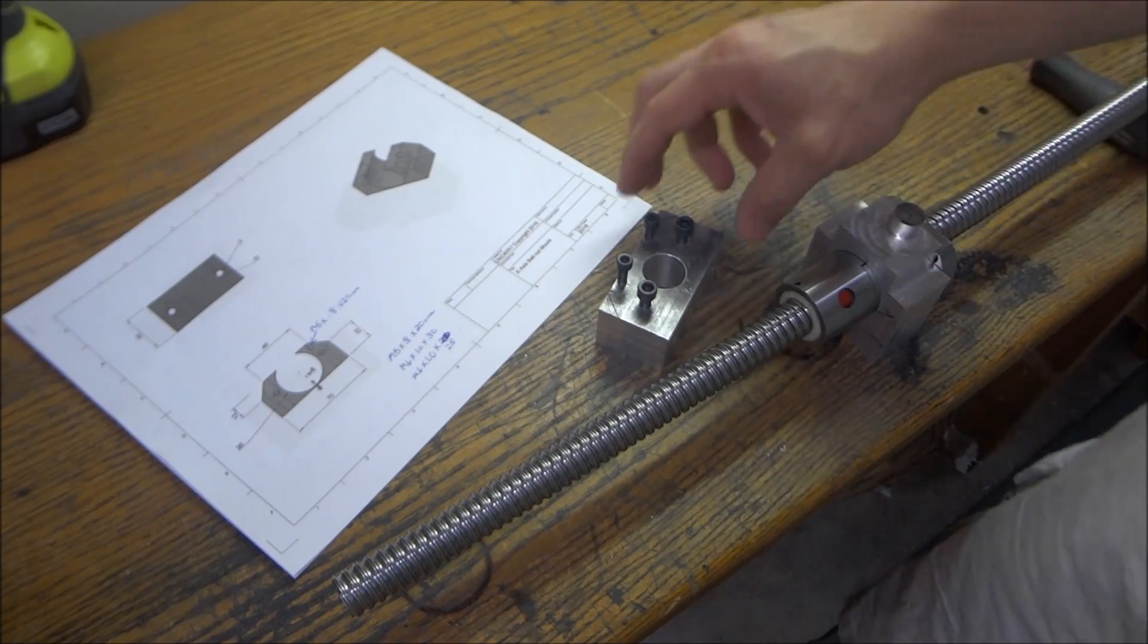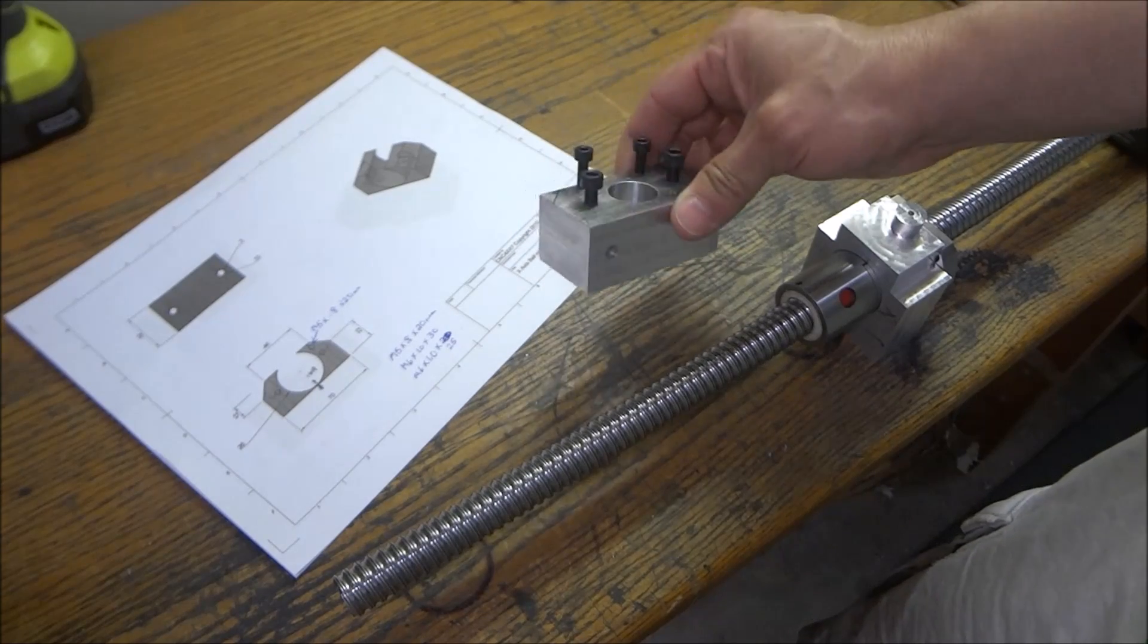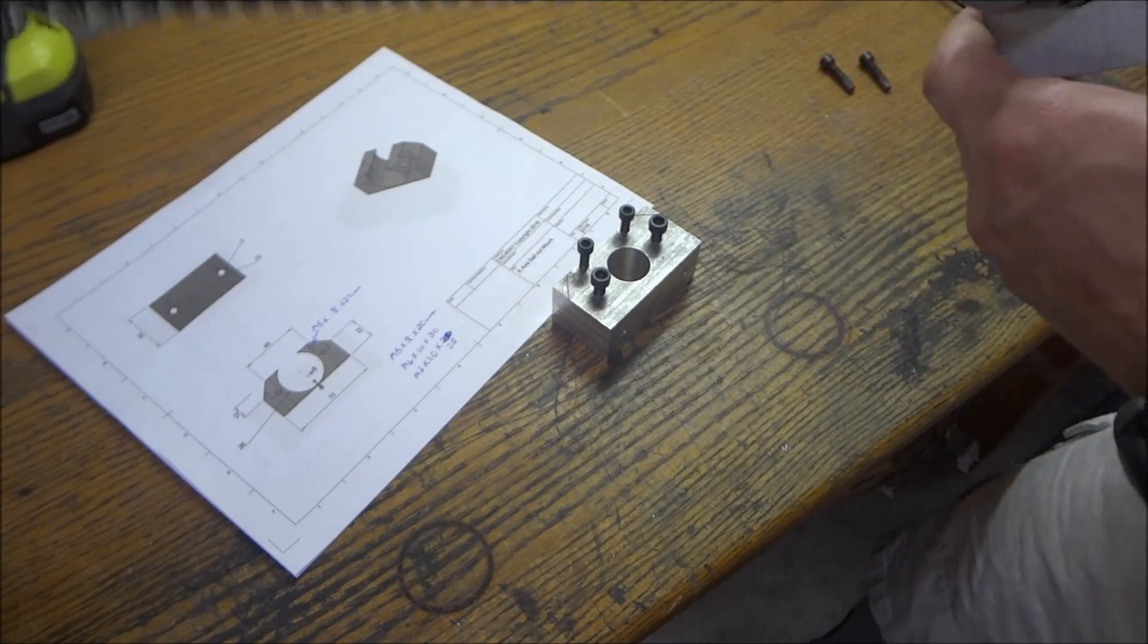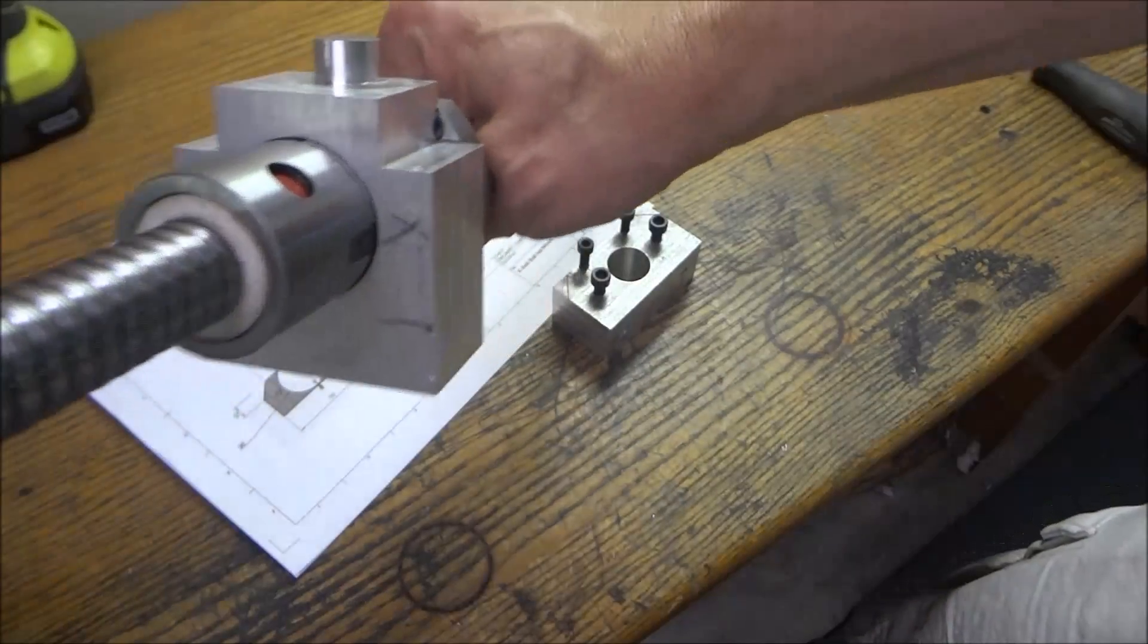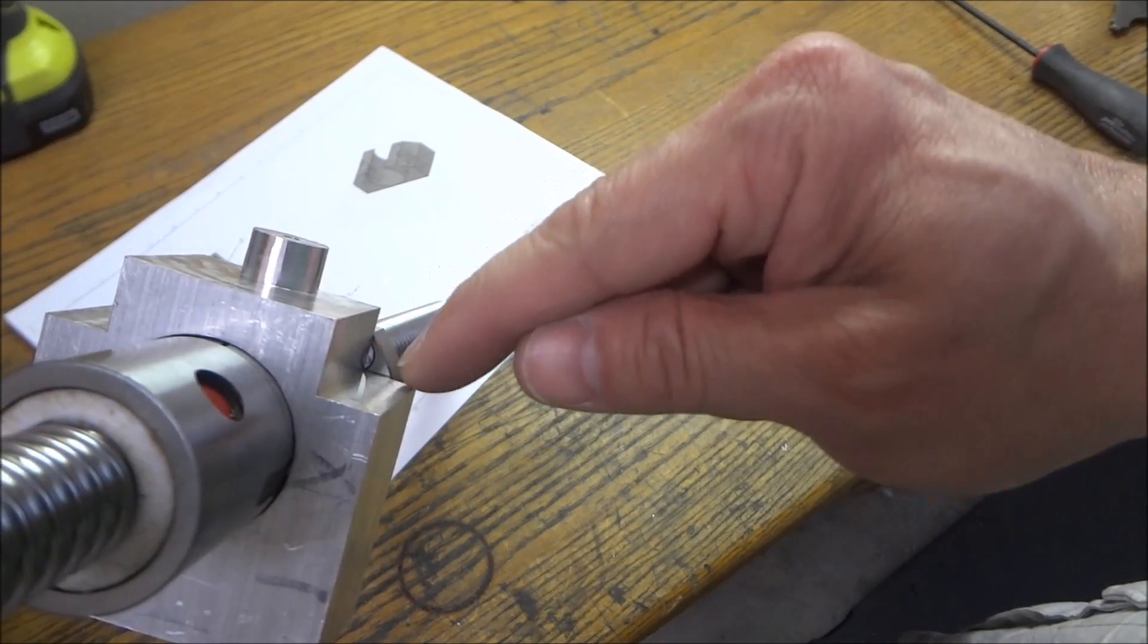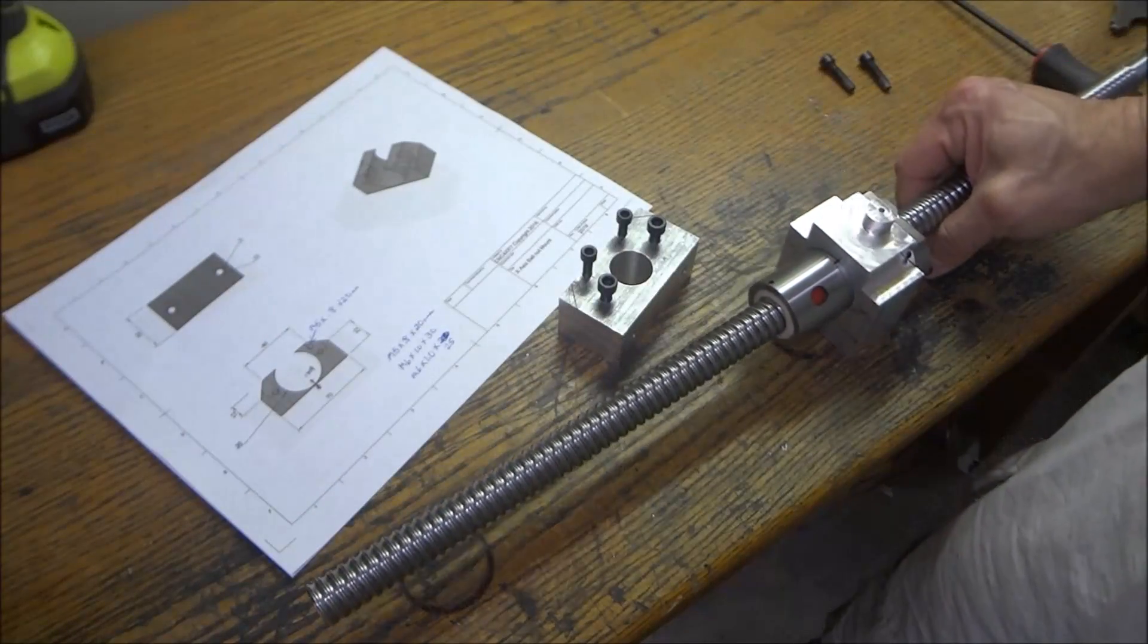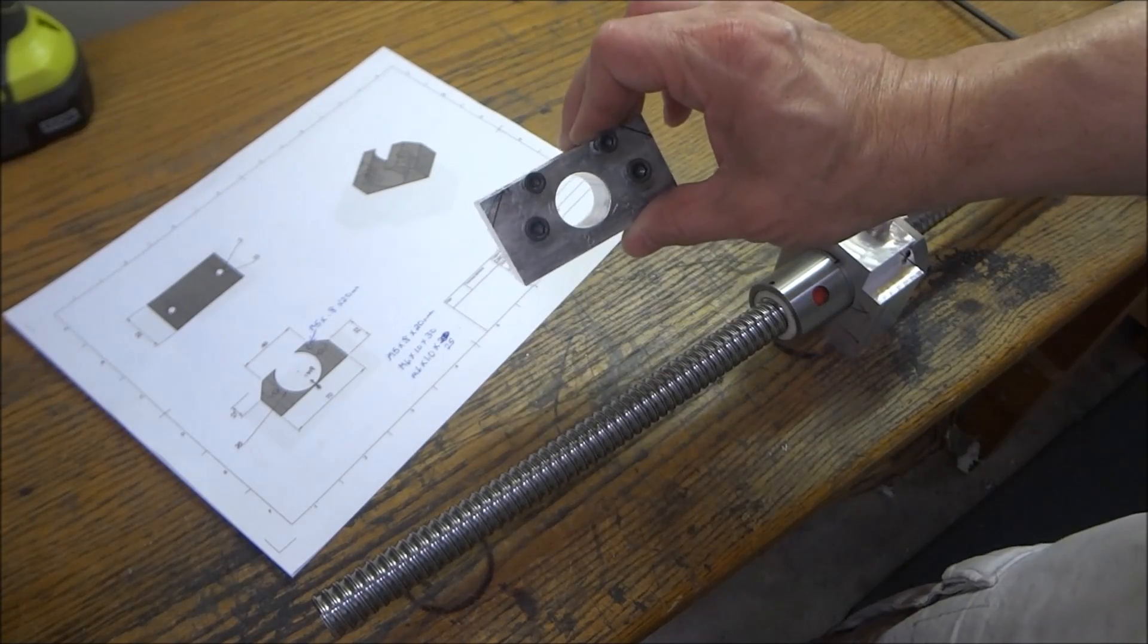Okay, so you can see we have our X ball nut coupling made and our Y. I still got to come back and notch this. See if I can get you a view of that - I still need to notch this just a little bit. I'll probably just do that with a cutoff wheel, the simplest way.